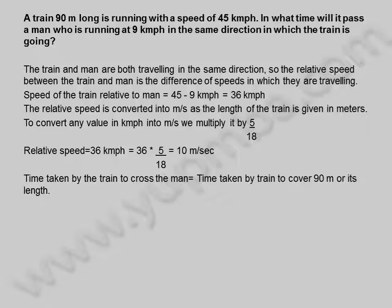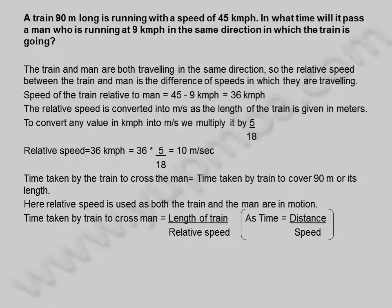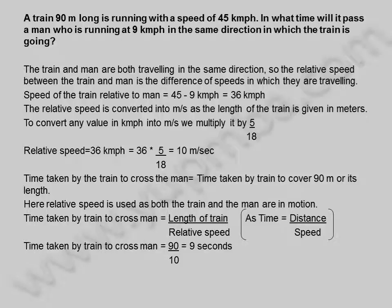Time taken by the train to cross the man is equal to the time taken by the train to cover 90 meters, or its length. Here relative speed is used as both the train and the man are in motion. Time taken by train to cross man is equal to length of train divided by relative speed, as time equals distance divided by speed. Time taken is 90 divided by 10, which equals 9 seconds. The time taken by the train to cross the man is 9 seconds.